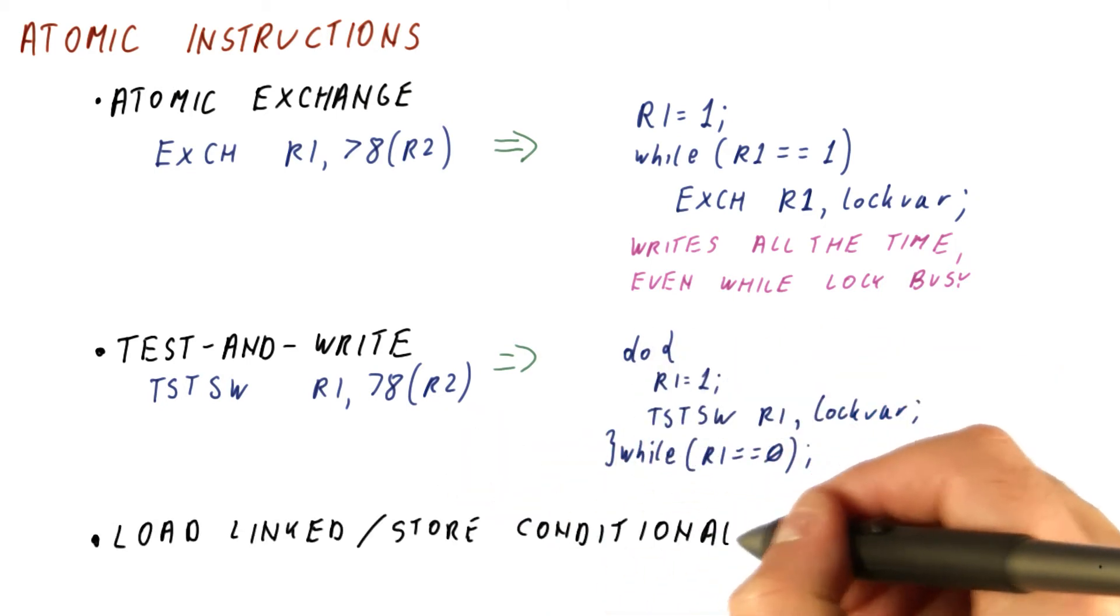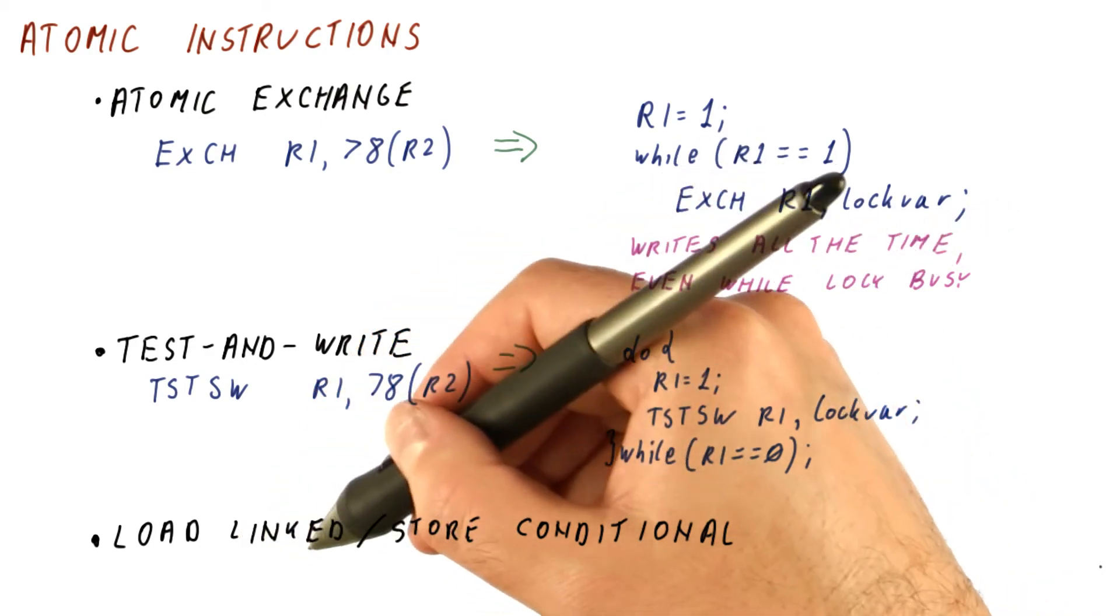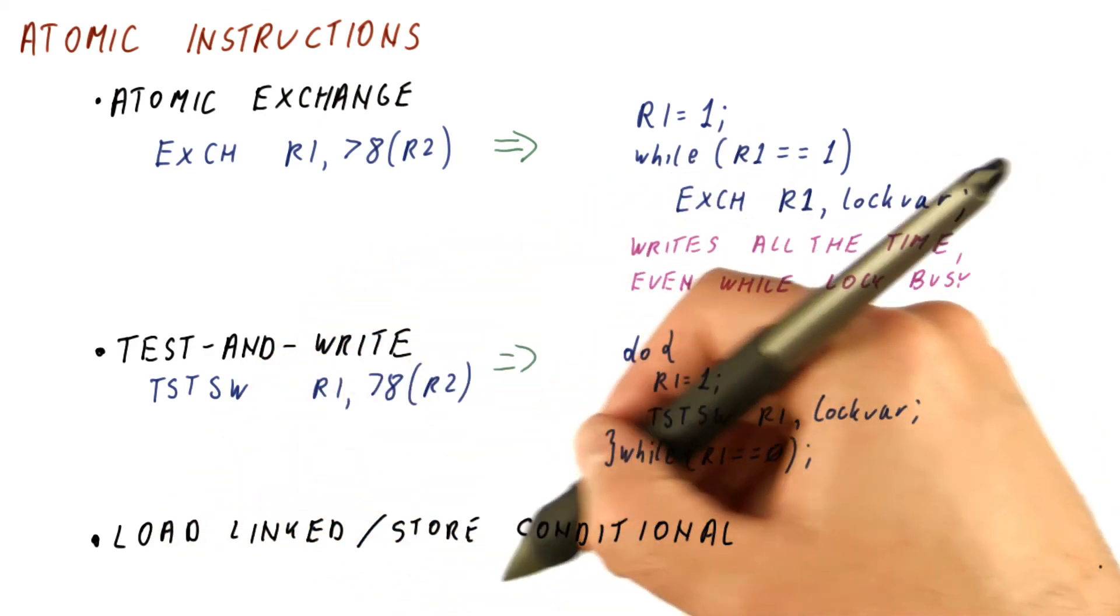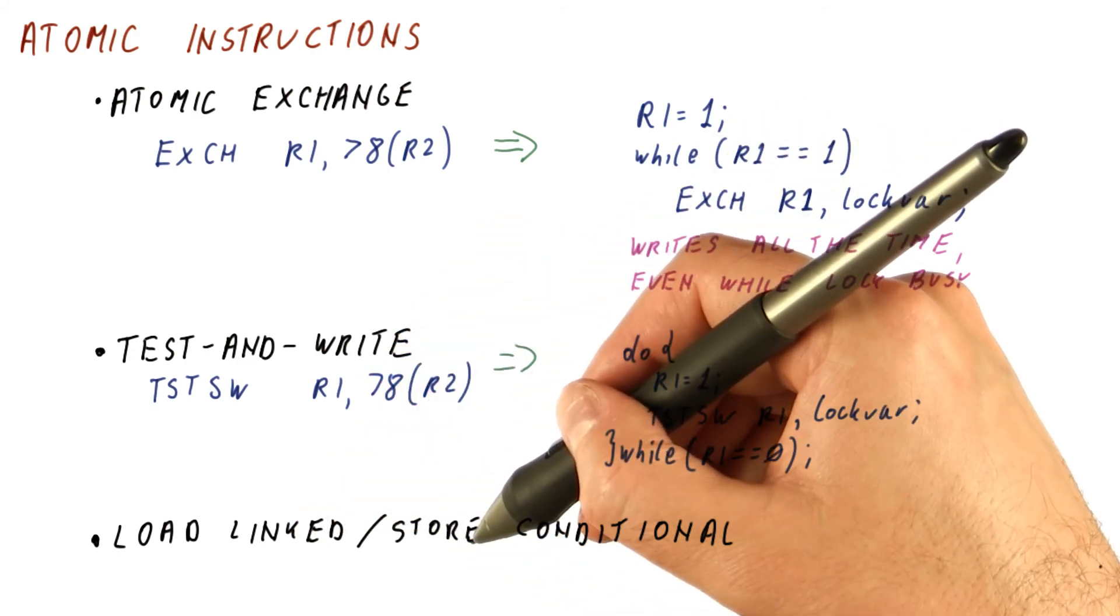And that brings us to the third type of atomic instructions, which are really now two instructions, the special load and a special store that are somehow linked together to create an atomic instruction.